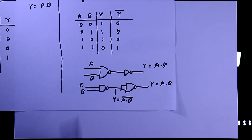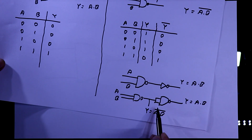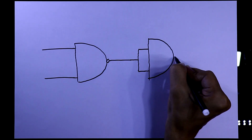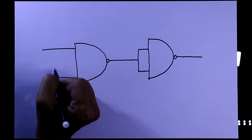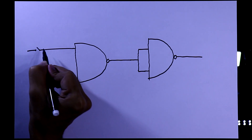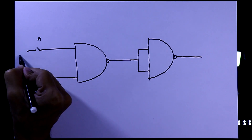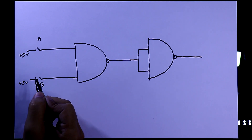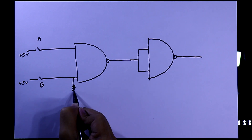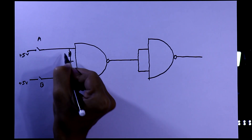Now we will see the practical circuit. As we have seen, we need 2 NAND gates. With the second NAND gate we have to connect both of the inputs together. So this is the basic circuit. We have to provide input here. For this I am connecting one switch for input A and input B. The other side of the switch is connected to plus 5 volt to provide input, and with the input we also have to connect a pull-down resistor.